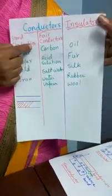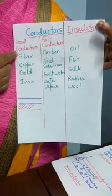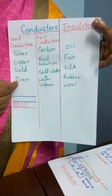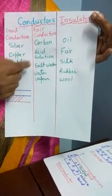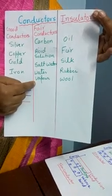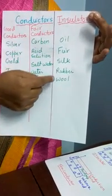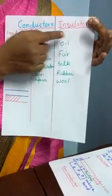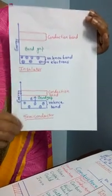Here is the list: good conductors, fair conductors, and insulators. All the metals — silver, copper, gold, iron — are good conductors. Carbon, acid solution, salt water, and water vapor are fair conductors. Oil, fur, silk, rubber, and wool are insulators.